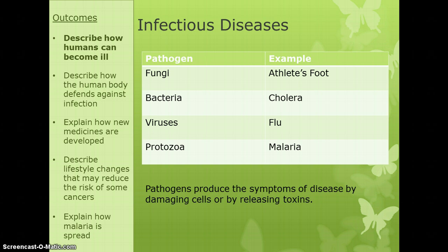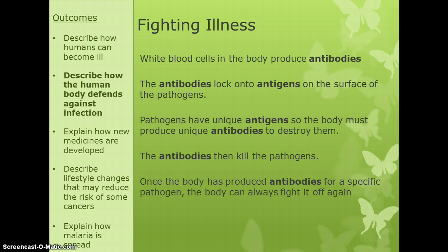The mosquitoes are what we call the vector, which we'll discuss later for higher tier students. Pathogens produce the symptoms of disease by damaging cells or by releasing toxins. Some symptoms are caused by the body's immune response, but we focus on damage to cells. The body fights illness using white blood cells, which produce antibodies. Antibodies lock onto antigens on the surface of pathogens — pathogens have unique antigens, so white blood cells must produce the correct antibodies to kill them. Once your body has produced antibodies for a specific illness, it can produce them again to fight off future infections.